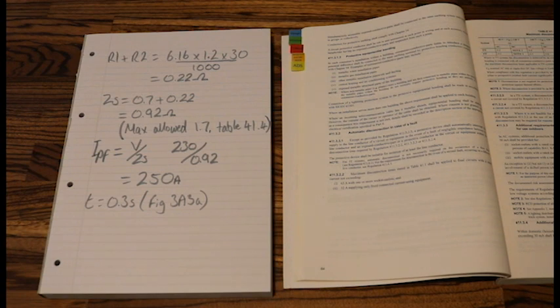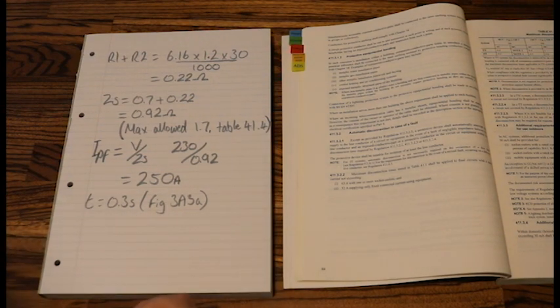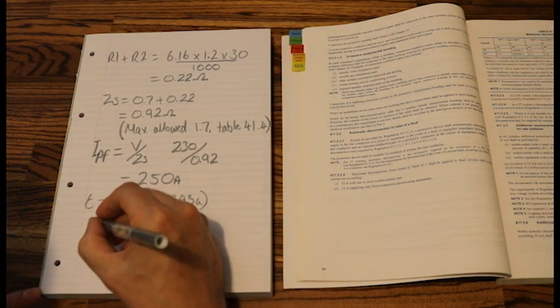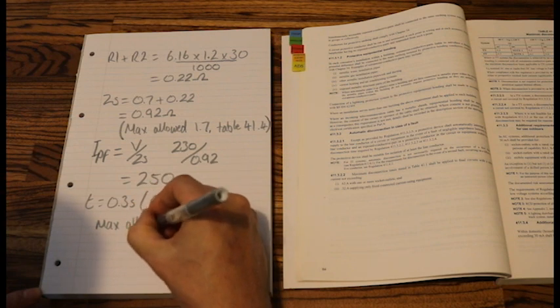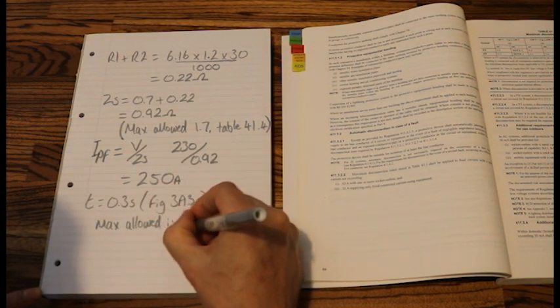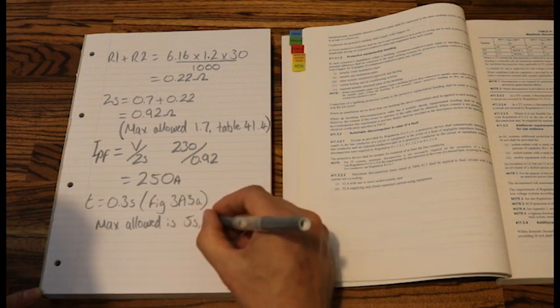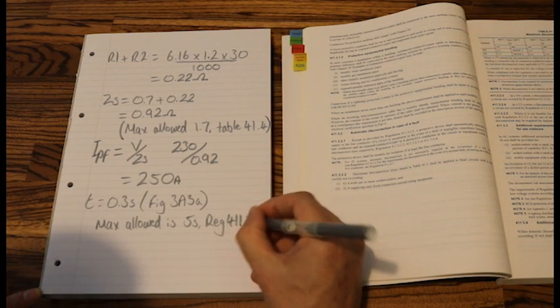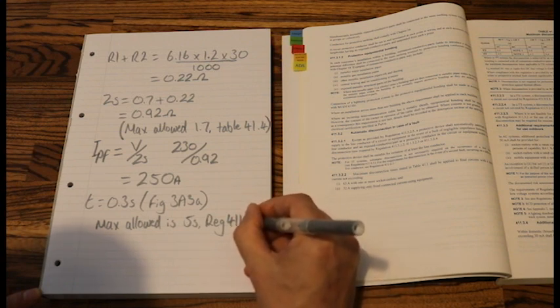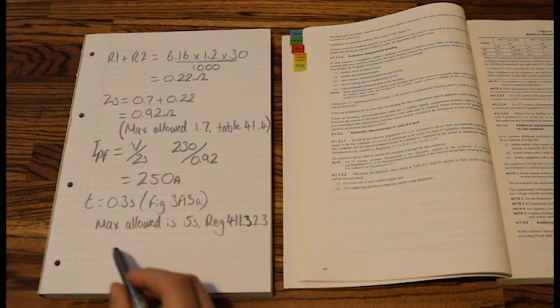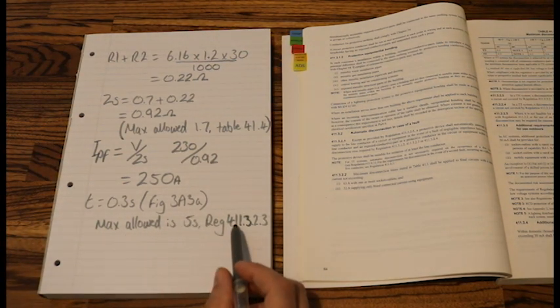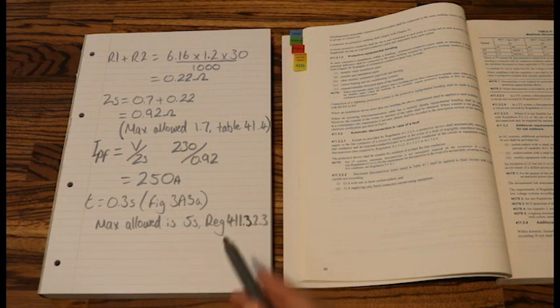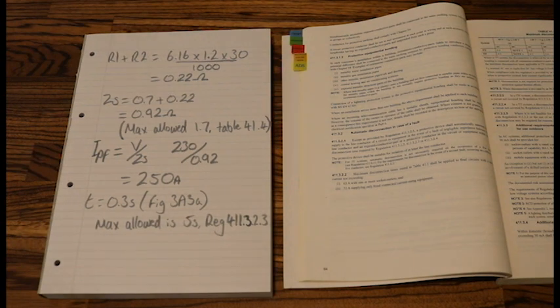So I can go ahead and let's write that down to gain those valuable extra marks. So we have my value of T we've worked out from our log-log graph of 0.3. Now we can write max allowed is 5 seconds and that was from regulation. Always write your regulation numbers that you use to gain those additional marks in your cable calculation question. Max allowed is 5 seconds, regulation 411.3.2.3. And there is how you work out whether your log-log graph, your T value, is compliant with BS7671.